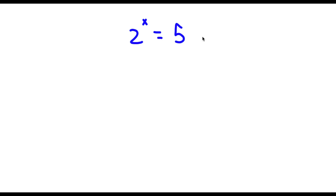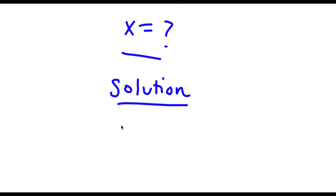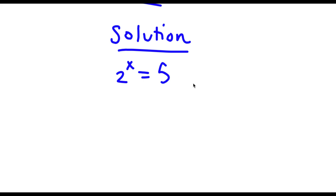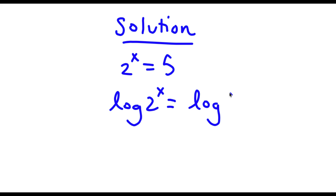So I have 2 to the power of x is equal to 5. Now I want to find the value of x. For my solution, I first start with 2 to the power of x is equal to 5. Now I'm actually going to take the log on both sides. So now I have log 2 to the power of x is equal to log 5.